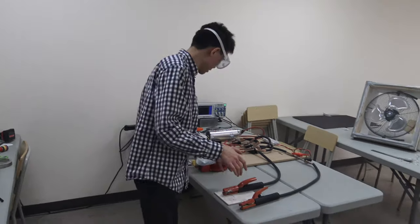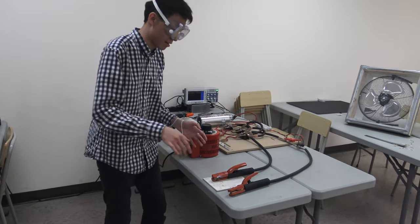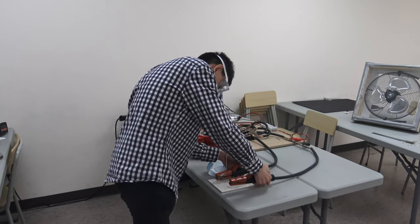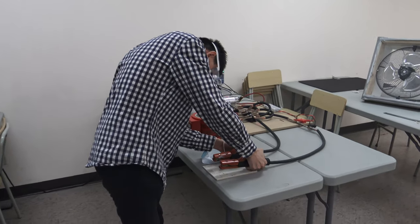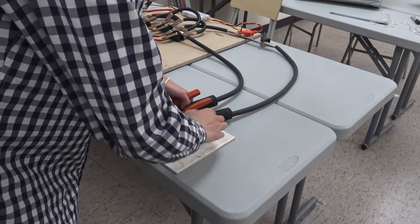And then I'm turning the variac off. We also have a discharge that has a resistor there to just discharge the capacitor so we don't get zapped. And then we'll just clamp this on. Okay let's give this thing a quick wipe.